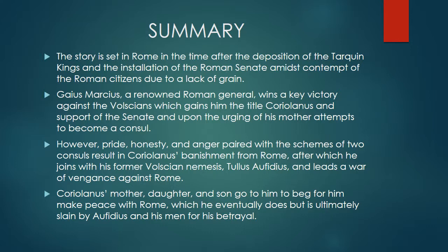However, due to his pride, honesty, and lack of political decorum, and the schemes of Brutus and Sicinius, he becomes enraged, condemns the people, loses their favor, and is eventually banished. Coriolanus then travels to the Volscian capital and seeks out Aufidius, asking him to kill him to spite Rome. Aufidius instead respects Coriolanus, spares him, and gives him charge of an army to attack Rome. As Coriolanus marches on Rome, several attempts to make peace are spurned, until his mother, son, and wife come to him and beg for peace. Coriolanus finally gives in — but when he meets Aufidius again, he is killed by Aufidius and his men for his betrayal.